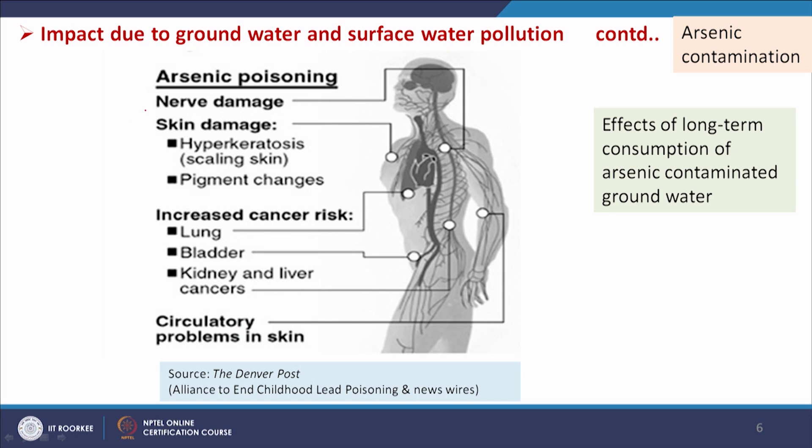Ground water contamination, particularly with arsenic and fluoride, is a very, very important topic today. Not only arsenic and fluoride, but many other pollutants available in ground water are also creating many negative impacts on human health. Here we are discussing the impact of arsenic. Arsenic poisoning has different effects like nerve damage, skin damage, and increased cancer risk — lung cancer, bladder cancer, kidney and liver cancers, and circulatory problems in skin. These are the major impacts due to long-term consumption of arsenic-contaminated ground water.